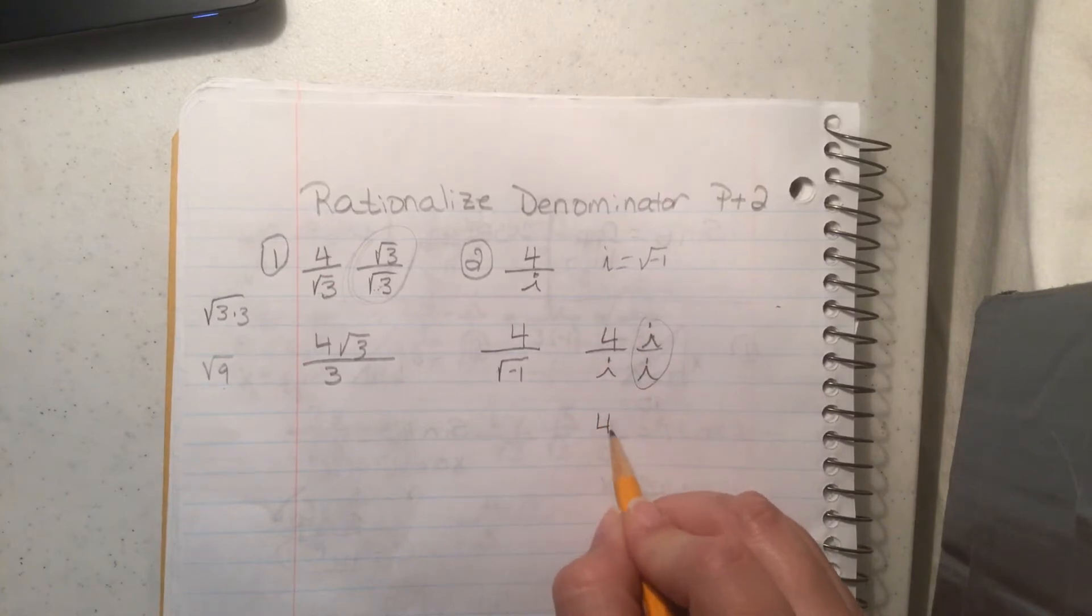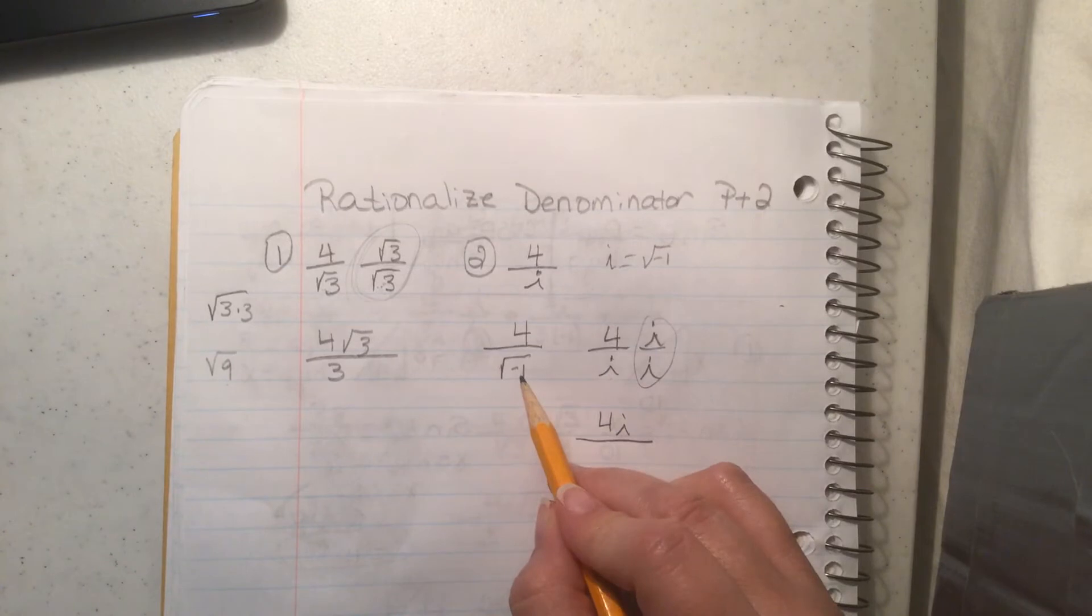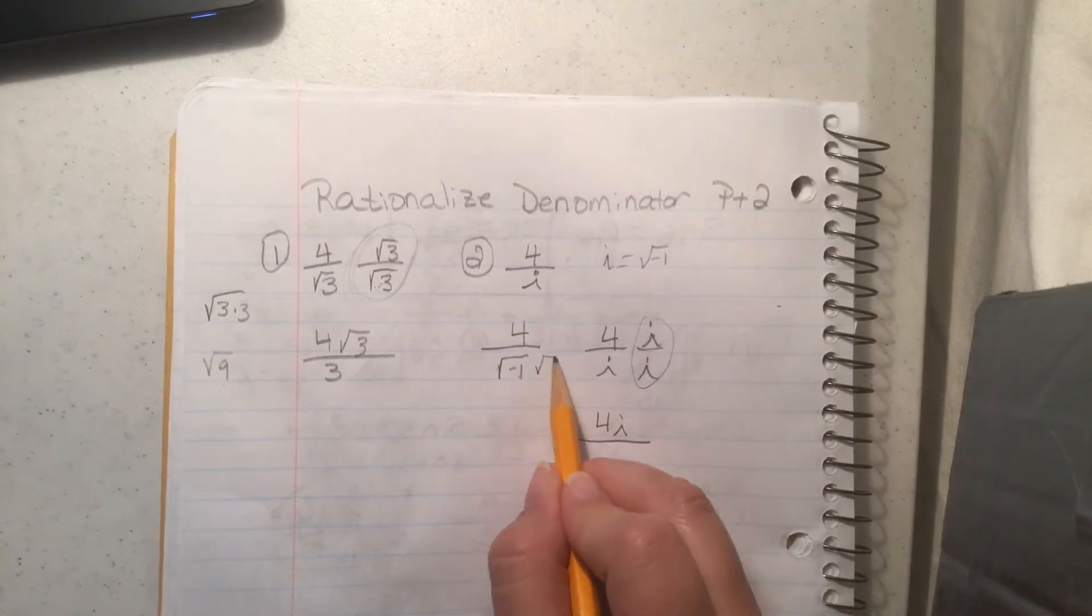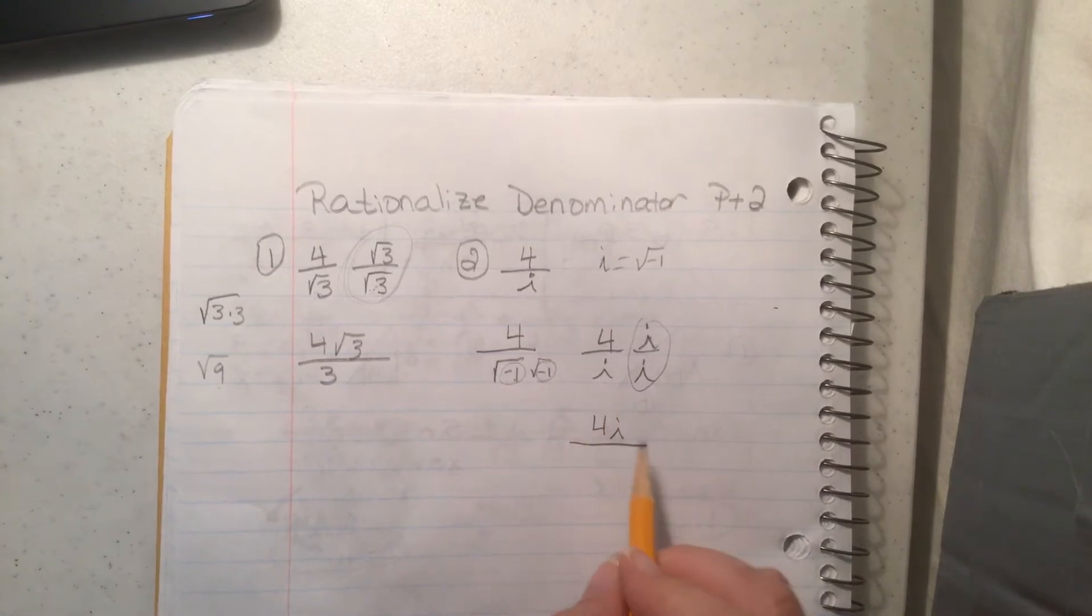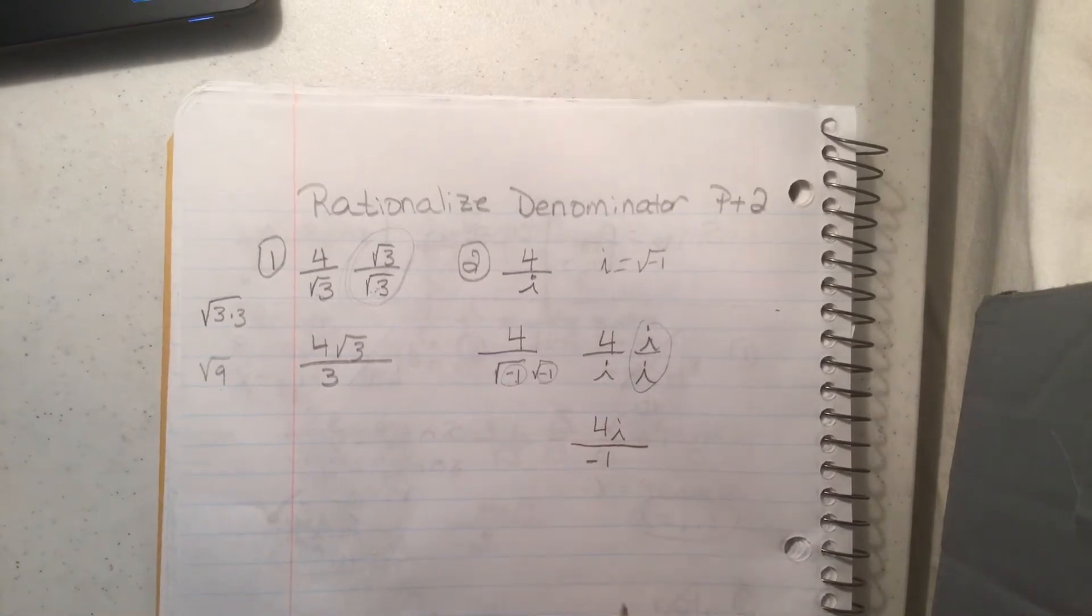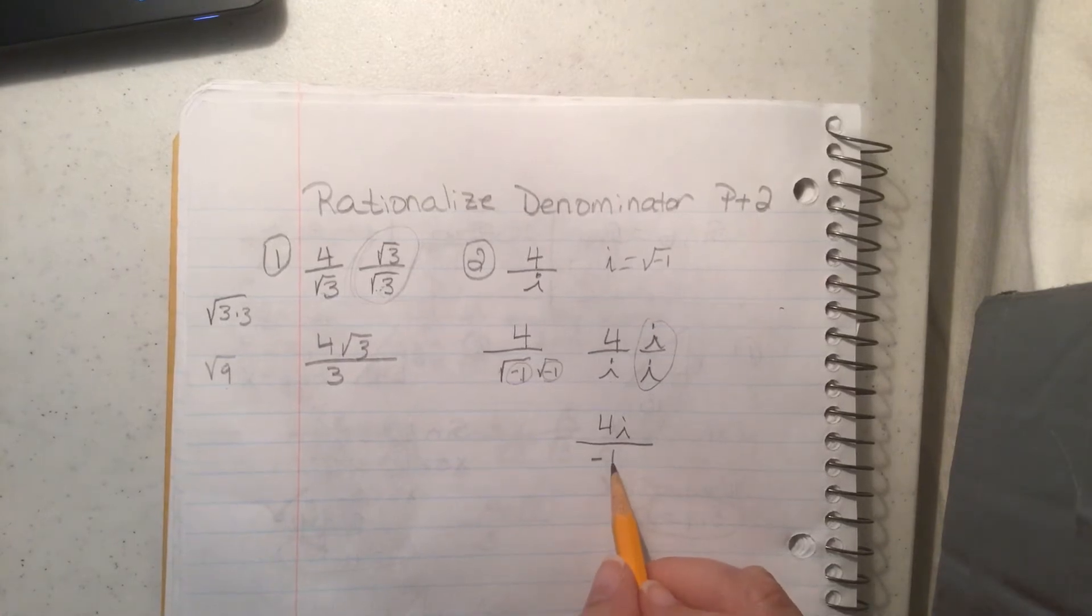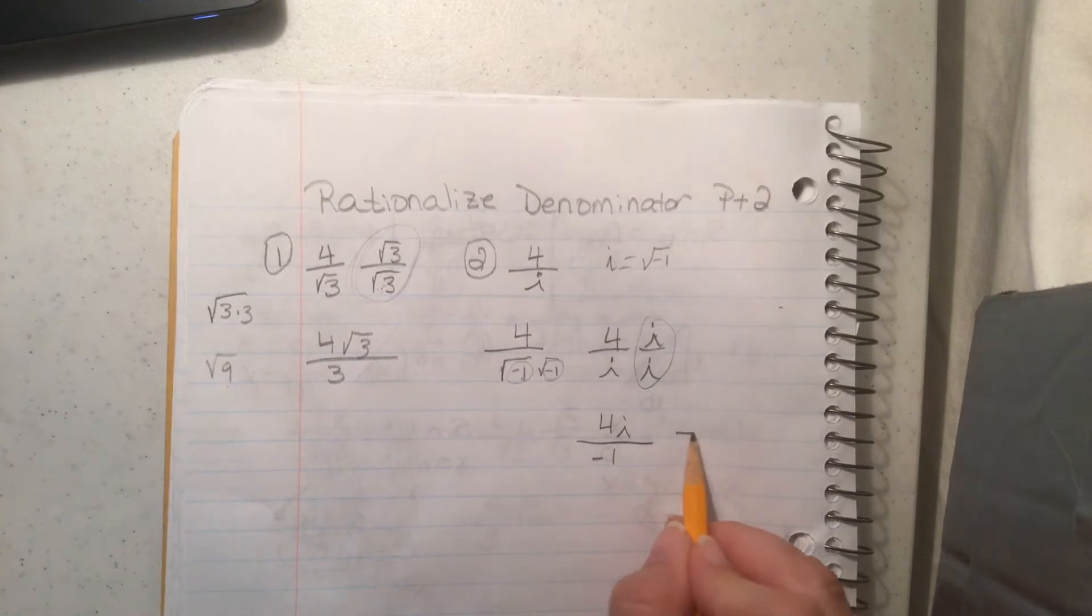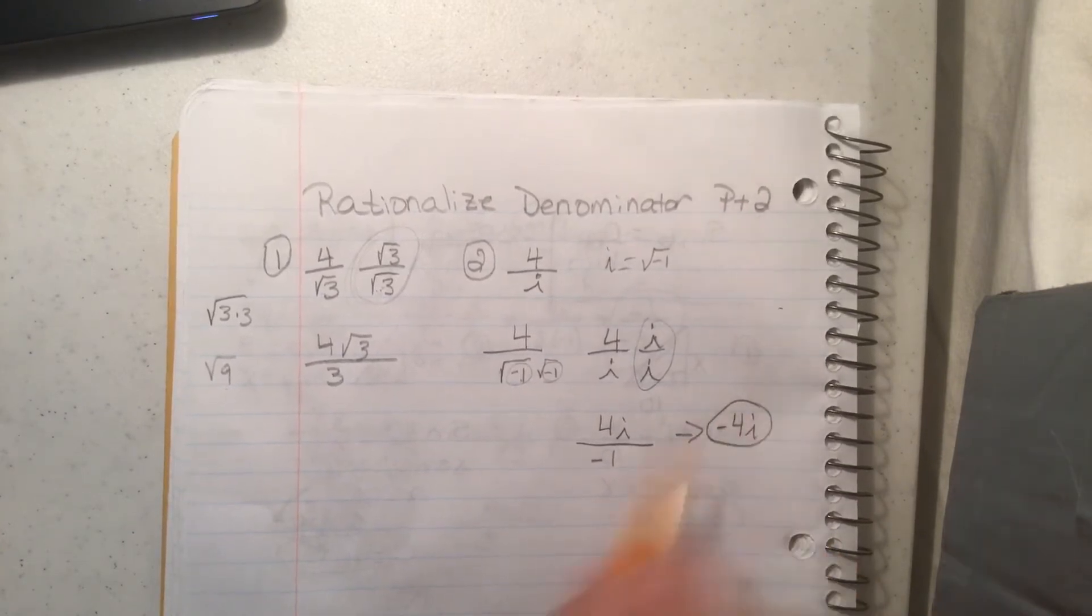Alright, so this is going to be 4i right there and remember i is square root of negative 1, so the square root of negative 1 times square root of negative 1 is going to be whatever's underneath the radical, so it's going to be negative 1. Okay? So what you can do with that, instead of leaving it like this since it's a negative 1 on the bottom you can just come up and make that negative 4i and that would work just fine.